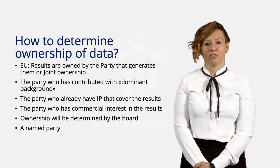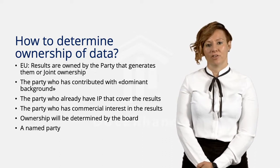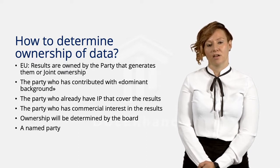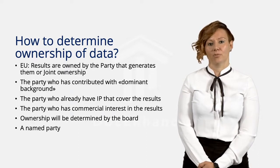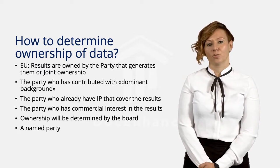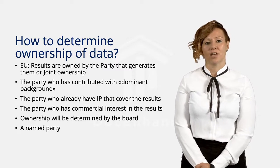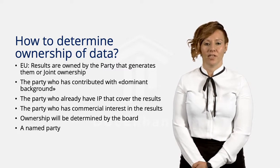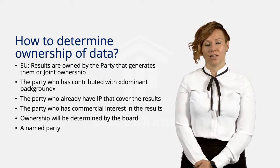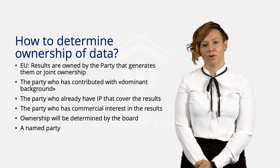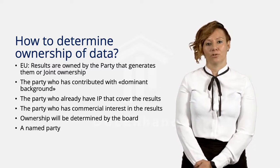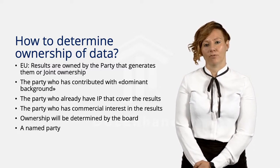Another way to decide is to let the board decide on ownership of results. If you go for this option, you will lose all control in deciding ownership of the results, as it may be given to other parties even if you have done the majority of work. If you go for this option, at least secure that the university has a member on the board. To avoid ambiguity, the best solution is to name the party who will have the right to the results.